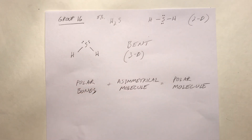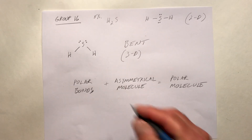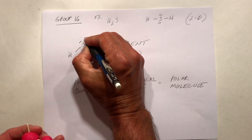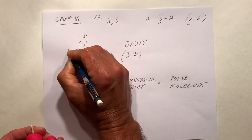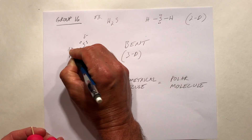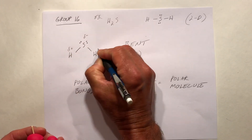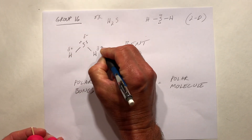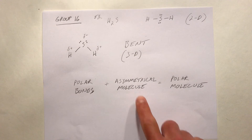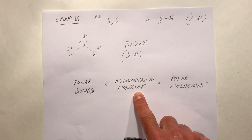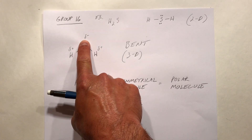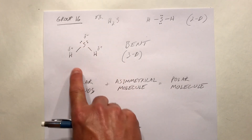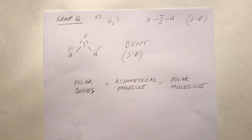We have polar bonds. The sulfur would be delta minus and the hydrogens would be delta plus. We'd have an asymmetrical molecule — we could say the top of the molecule is slightly negative and the bottom of the molecule is slightly positive.